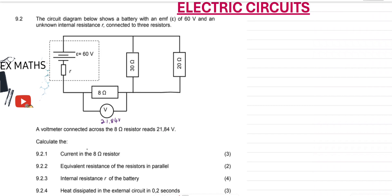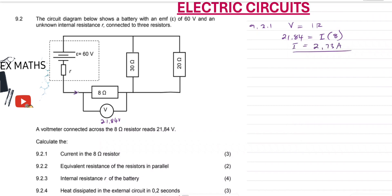9.2.1: calculate the current in the 8 ohm resistor, which is the one reading 21.84. Using V = IR, our V is 21.84, equal to I times the resistance of 8 ohms. Dividing both sides by 8, we get the current I = 2.73 amps. This is the current flowing through the 8 ohm resistor.